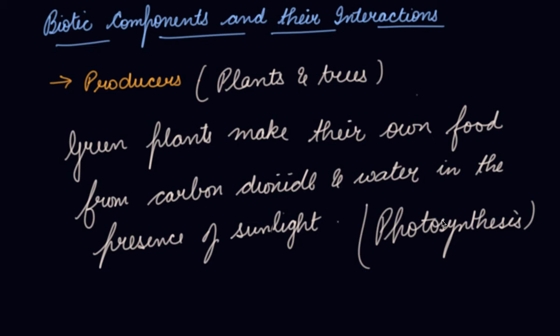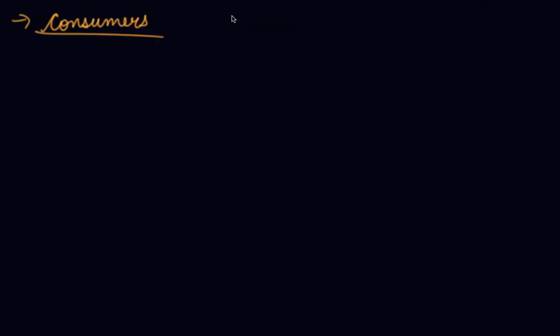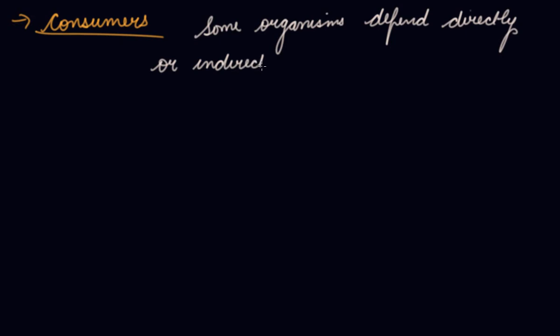Let's study about consumers now. Some organisms depend directly or indirectly on the food prepared by plants, and they are called consumers because they are dependent on the plants and other animals for their food.